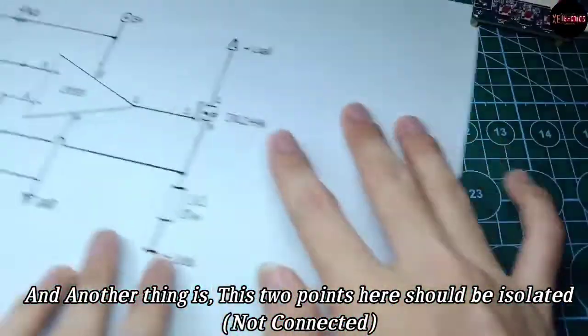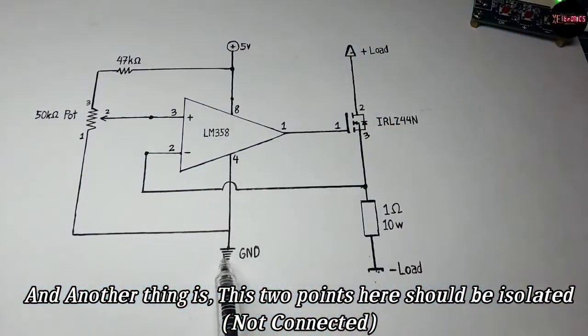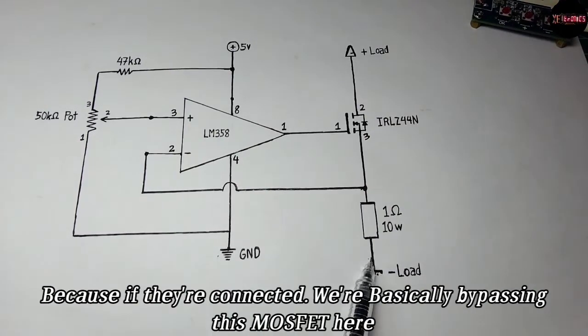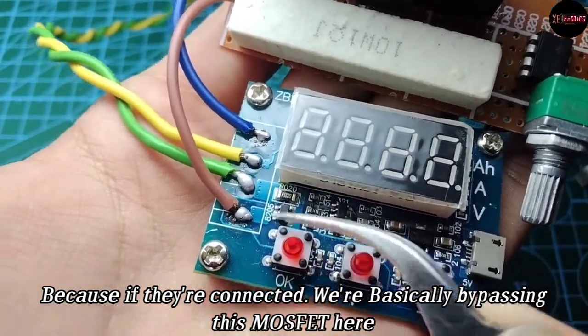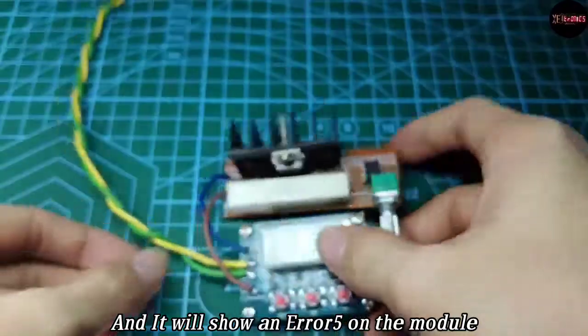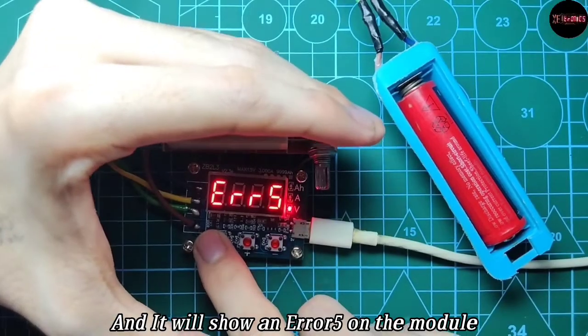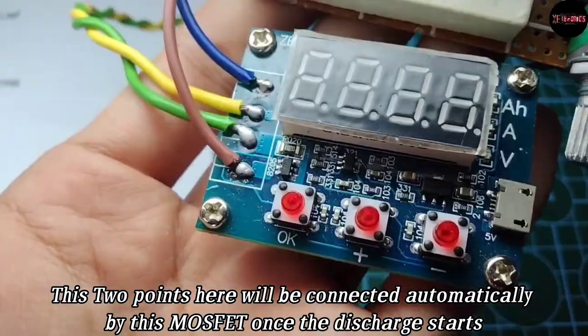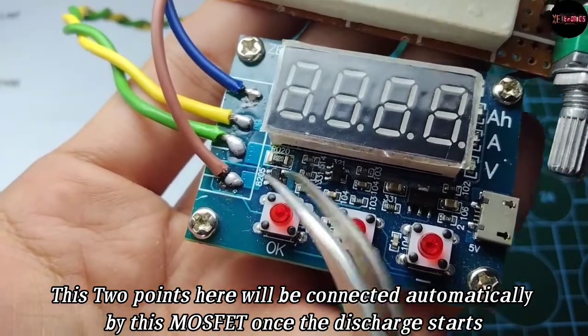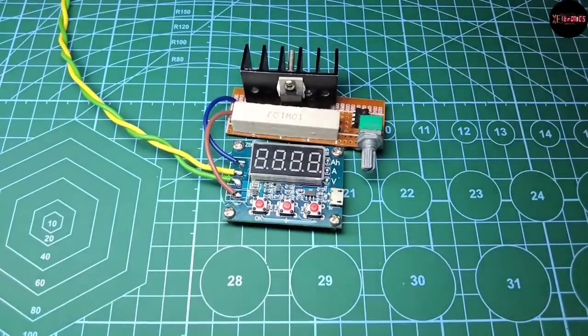And another thing is these two points here should be isolated, because if they are connected we're basically bypassing this MOSFET here and it will show an error five on the module. These two here will be connected automatically by this MOSFET once the discharge starts.